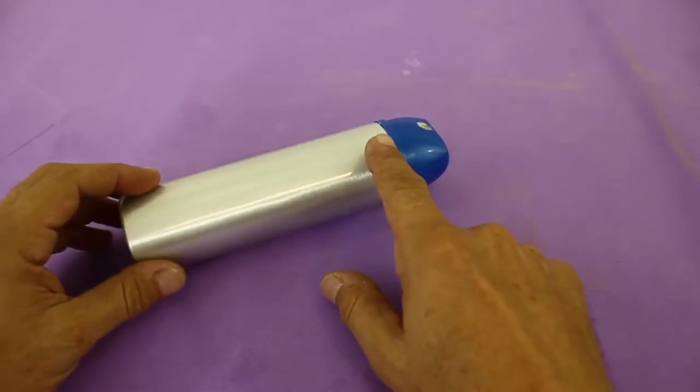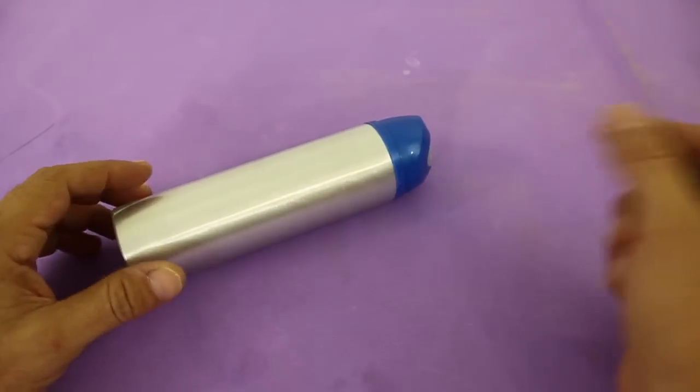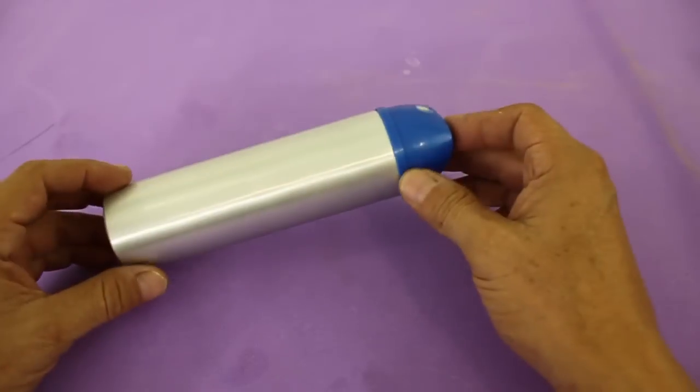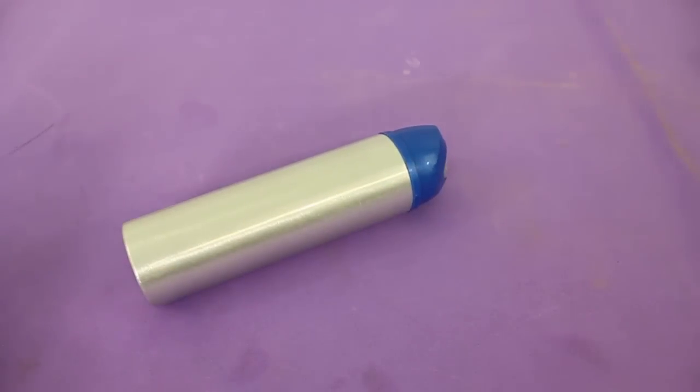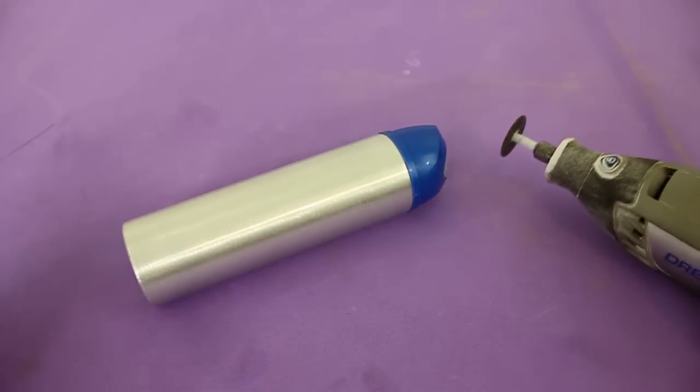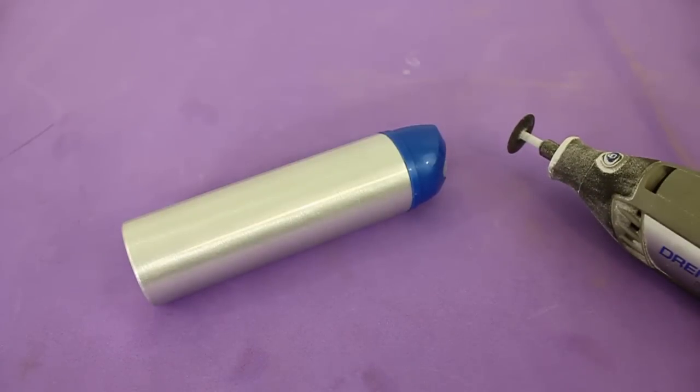We need to cut the upper side of the can, but first be sure to empty the can otherwise you will make a mess. For that you can use the motor tool or a hacksaw.